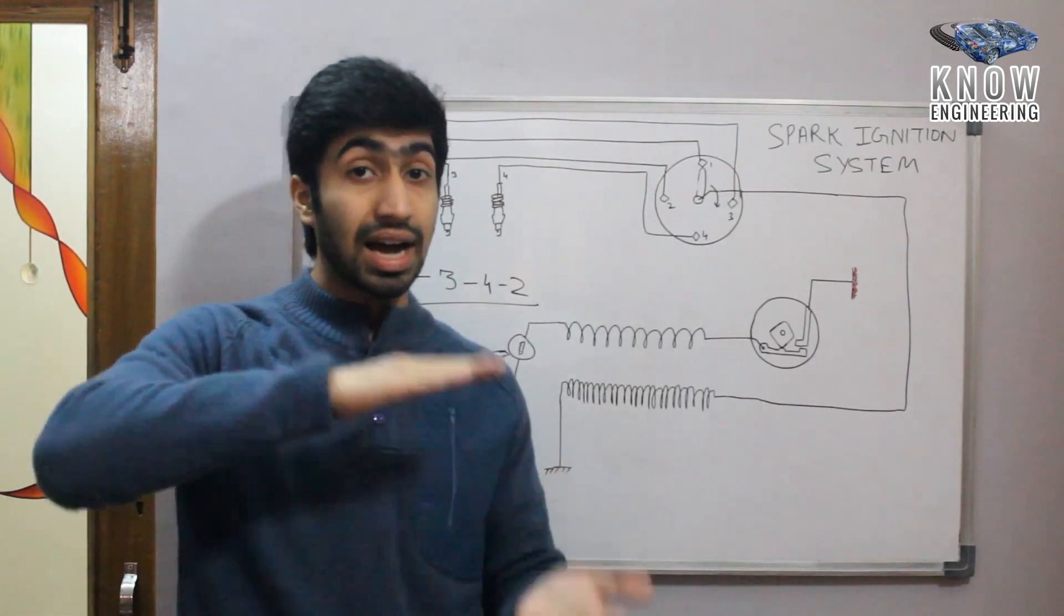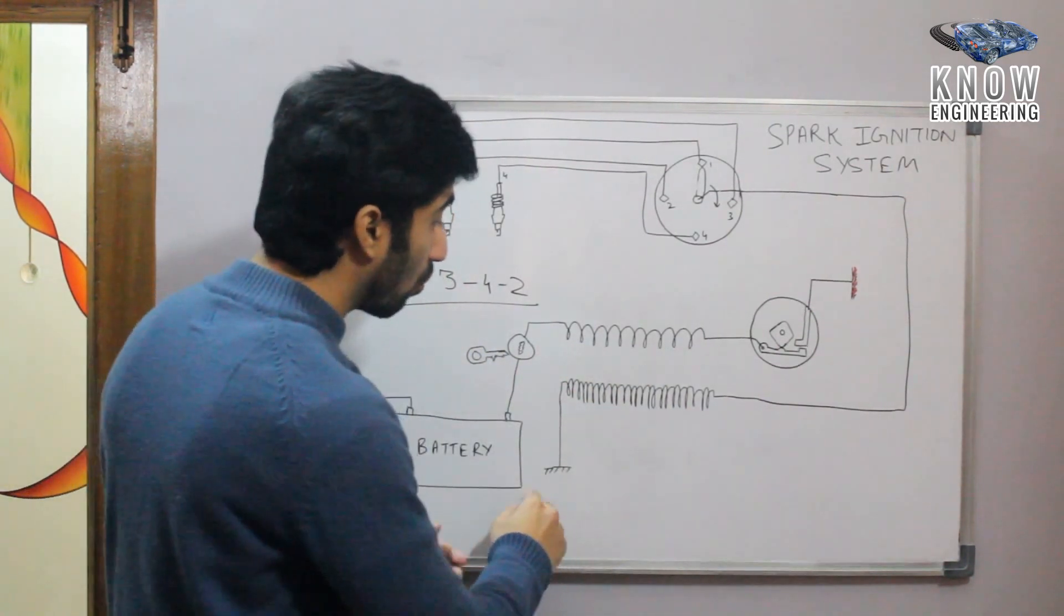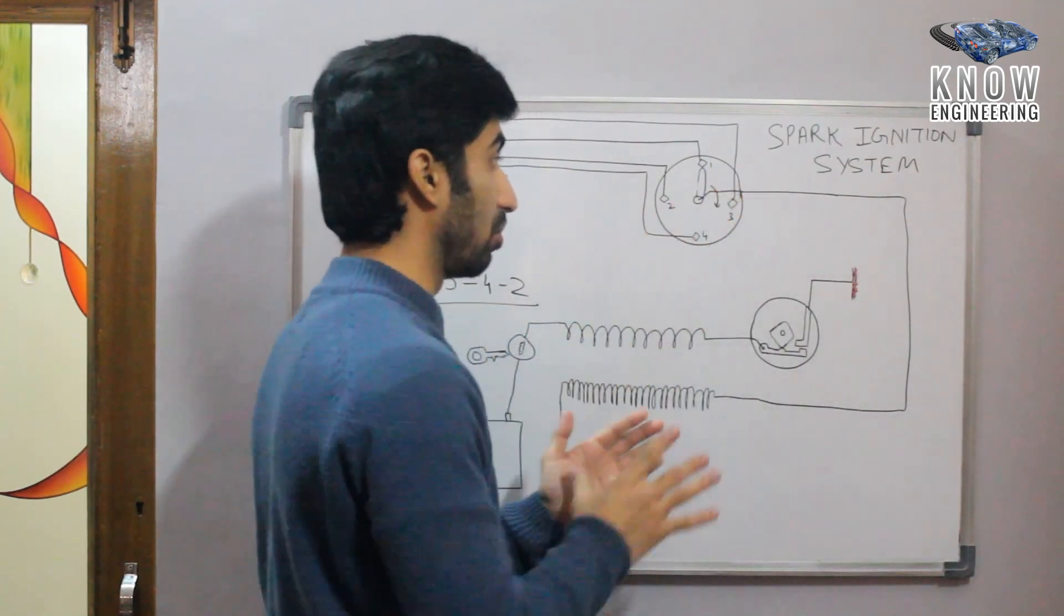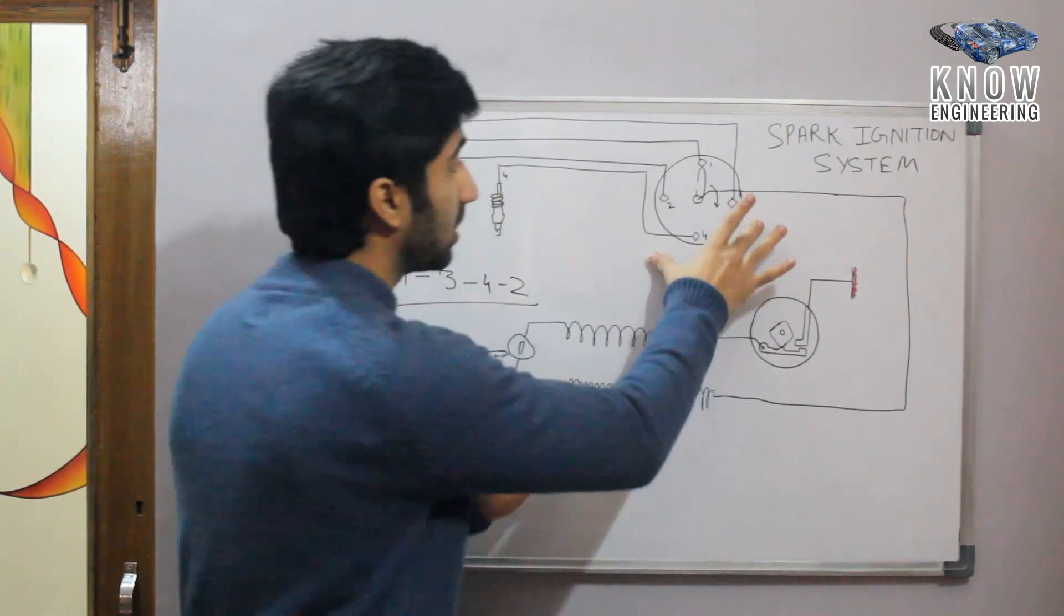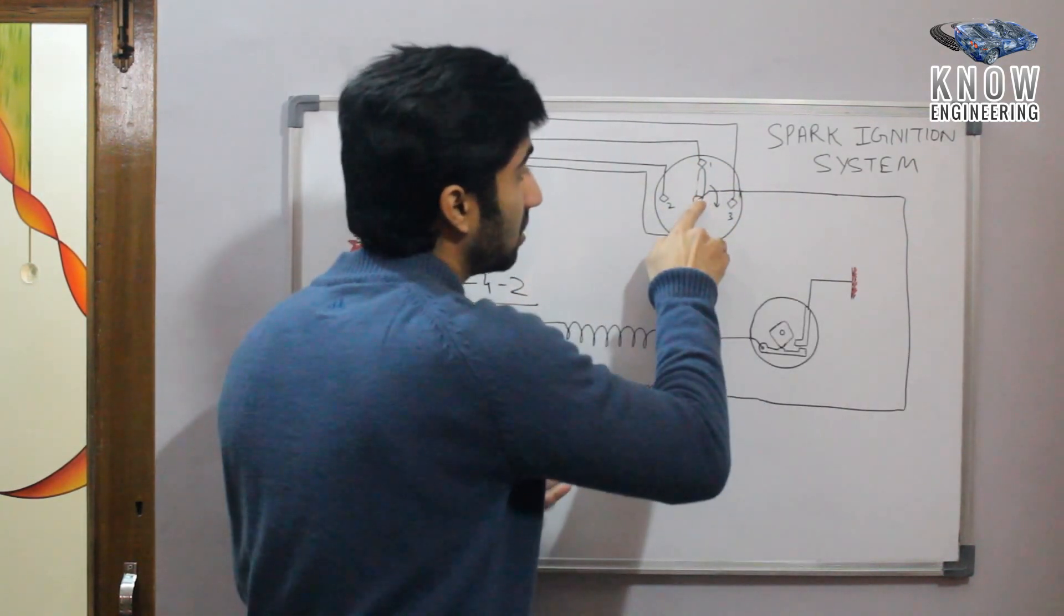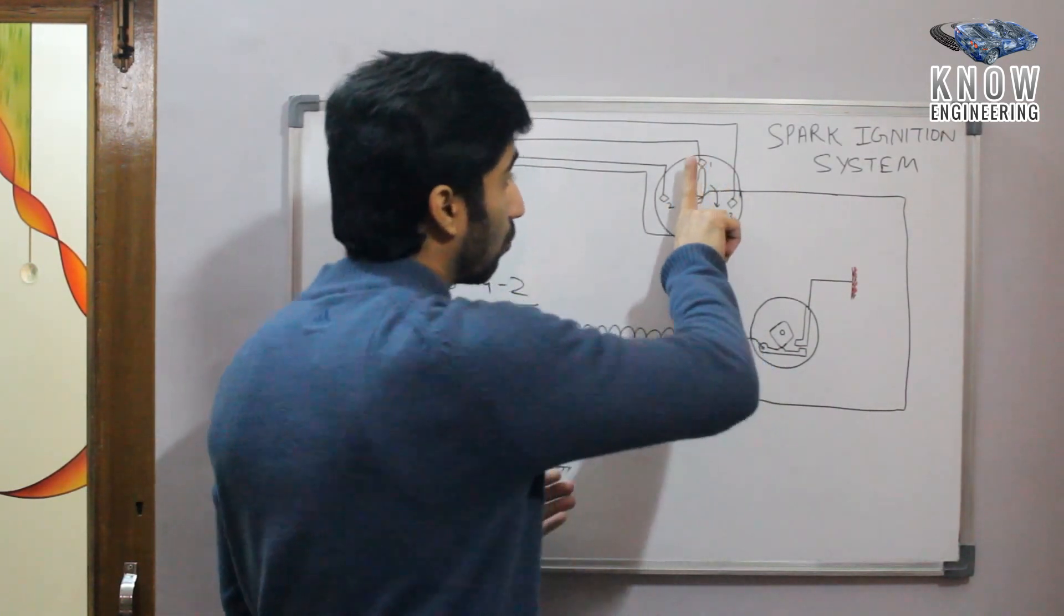It is a very large difference due to the very large number of turns. One terminal is connected to the metal body and the second terminal is connected to the distributor. The second terminal is connected to the center of this distributor and it has a metal bar.